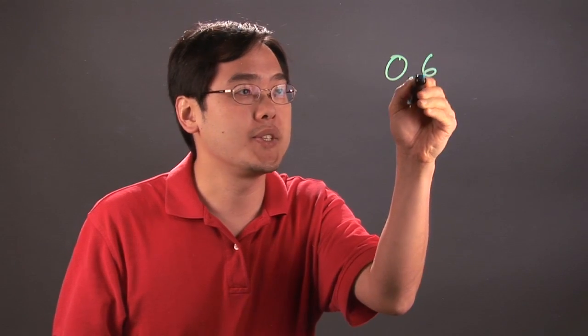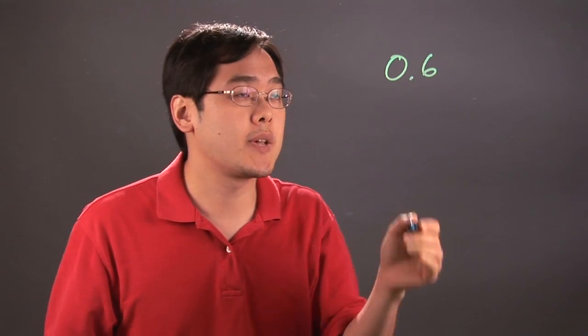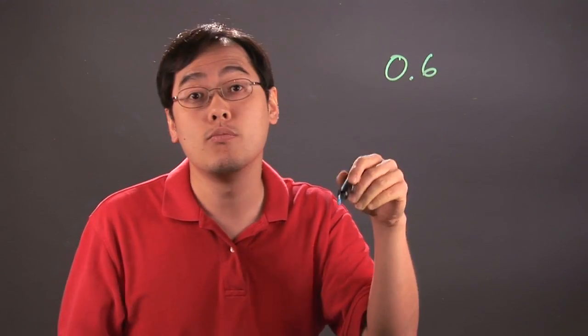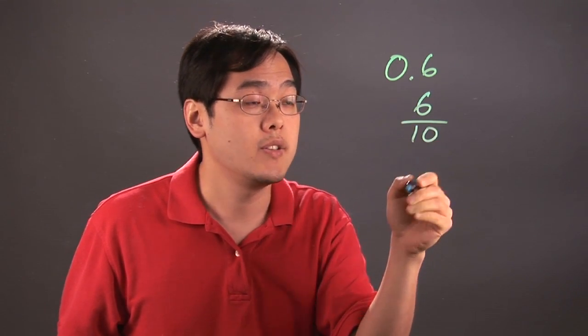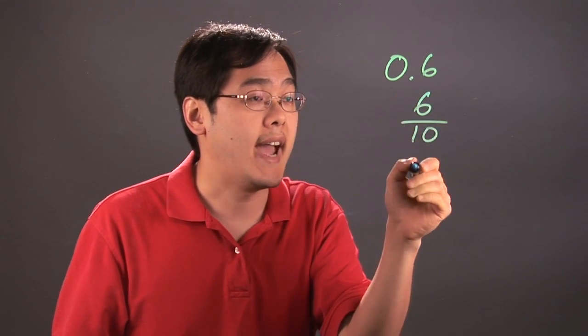So for example, if you have 0.6, 0.6 can be read as 6 tenths. So 6 tenths is a fraction that you can write after looking at it.